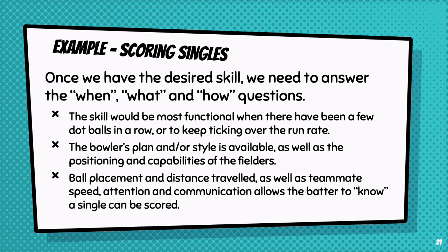Let's explore an example. If we want to encourage batters to score more singles, we need to think about when they would want to score a single, what would contribute to scoring a single, and how they would know it was a single scored. The skill would be most functional when there have been a few dot balls in a row or to keep on top of the run rate. The bowler's plan or style is available, as well as the positioning and capabilities of the fielders. Ball placement and distance travelled, as well as teammate speed, attention, and communication, allows the batter to know a single can be scored.